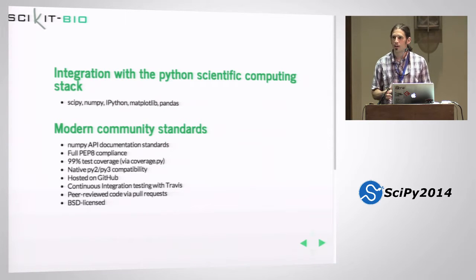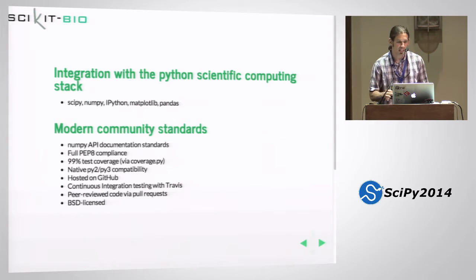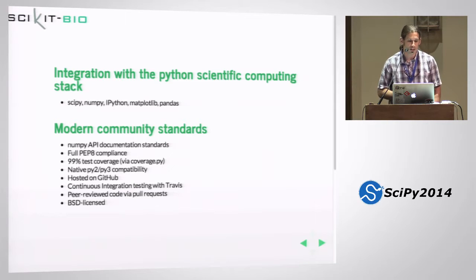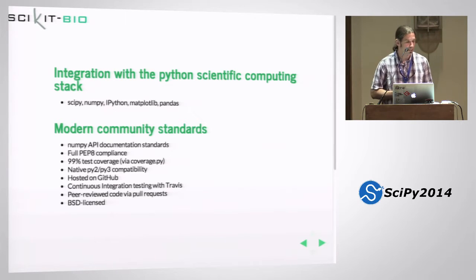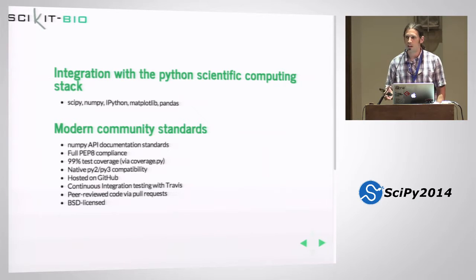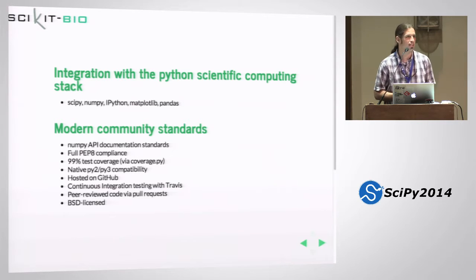That includes adhering to the NumPy API documentation standards, going for full PEP8 compliance — all of our code in scikit-bio is fully PEP8 compliant. We include test coverage in our continuous integration, so we've got 99% test coverage, and we know if any pull request is going to reduce that. We have native support for Python 2 and Python 3, everything hosted on GitHub, continuous integration testing with Travis, peer-reviewed code via pull requests, BSD license, and so on.